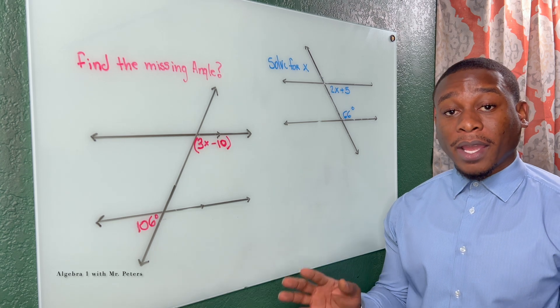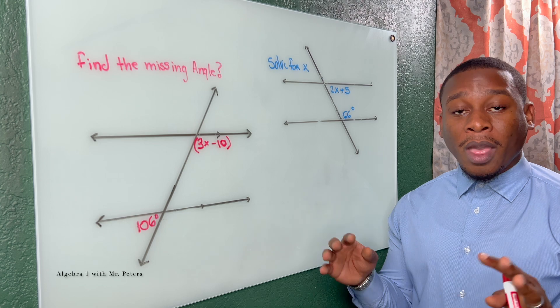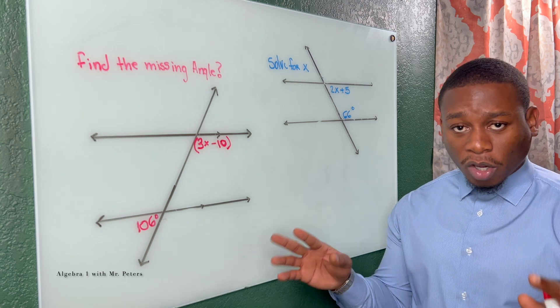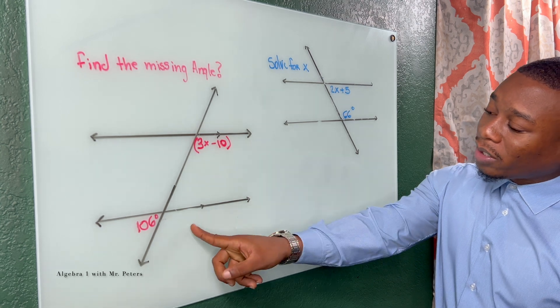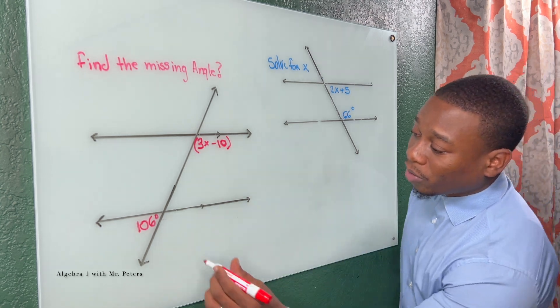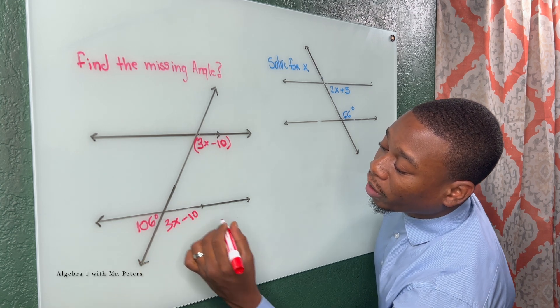Starting this video out we're talking about the angle theorems. So we're talking about corresponding angles, vertical angles, alternate interior exterior angles, all of those. So as I look at this first example I know this angle here and this angle here are corresponding angles. So they're going to be the same so I could fill this in as 3x minus 10.